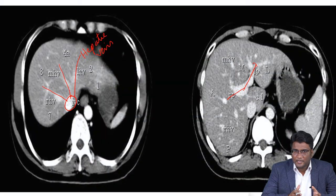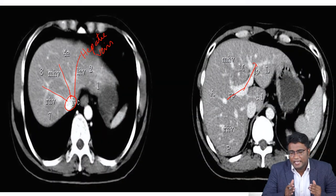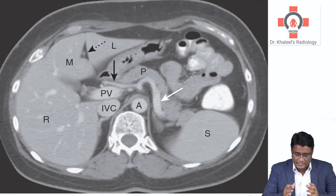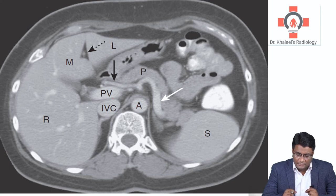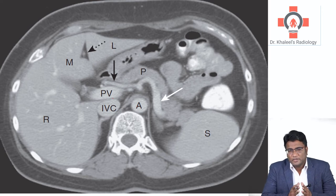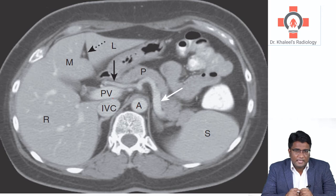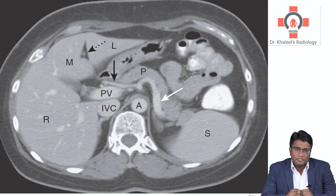You should know how to identify the hepatic veins: they run longitudinally in the liver and converge towards the inferior vena cava. The portal vein goes transversely in the liver, and the hepatic artery is present just anterior to the portal vein. Regarding enhancement pattern: when the aorta is enhancing, the hepatic arteries will be enhancing, and in the portal venous phase the portal structures will be seen better.